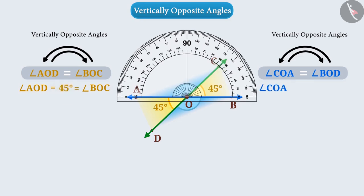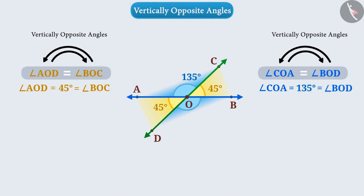Similarly, if we find the measurement of angle COA then we will get 135 degrees which will be equal to the measurement of angle BOD.